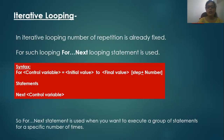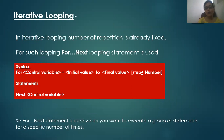Now we will look at iterative looping. In iterative looping, the number of repetitions is already fixed. For such looping in QBasic, we use the FOR-NEXT looping statement.